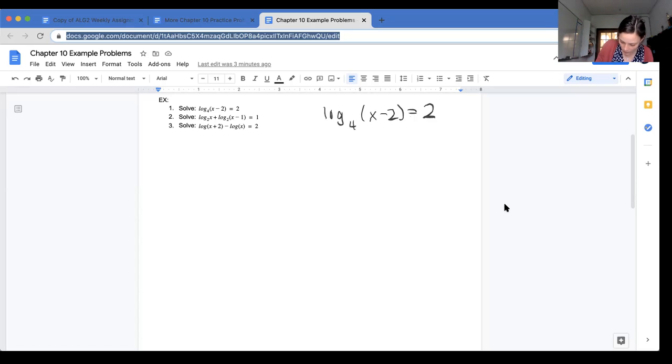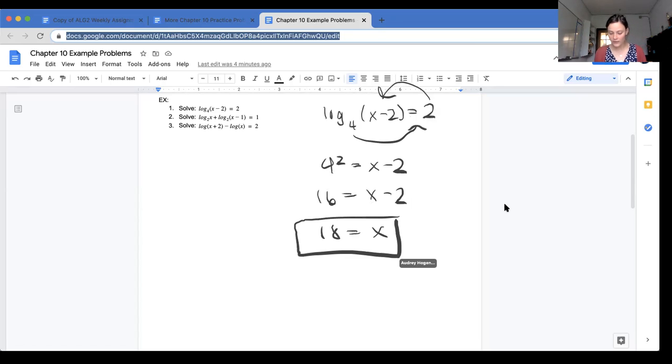So when I look at this, I can rewrite it as 4 squared equals x minus 2. And then 4 squared is 16 equals x minus 2. I'm going to add 2 to the other side, so 18 is equal to x. The only other thing you have to make sure you're careful of is that when you plug in whatever value you've got for x, it doesn't make the value of your logarithm negative. Because remember that when we have log base b of x equals y, x and y and b all have to be positive. So if I plug in 18 for x here, I get log base 4 of 16. Still positive. We're in business.